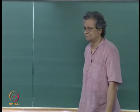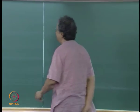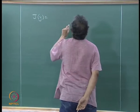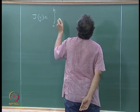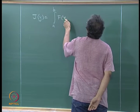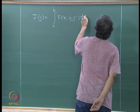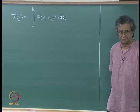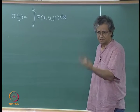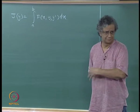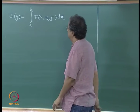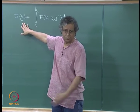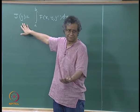Just to first recollect: J of y is a functional — it takes a function as an argument and returns a real number. So this is a map, just like our norms, which also took a function and returned a number.